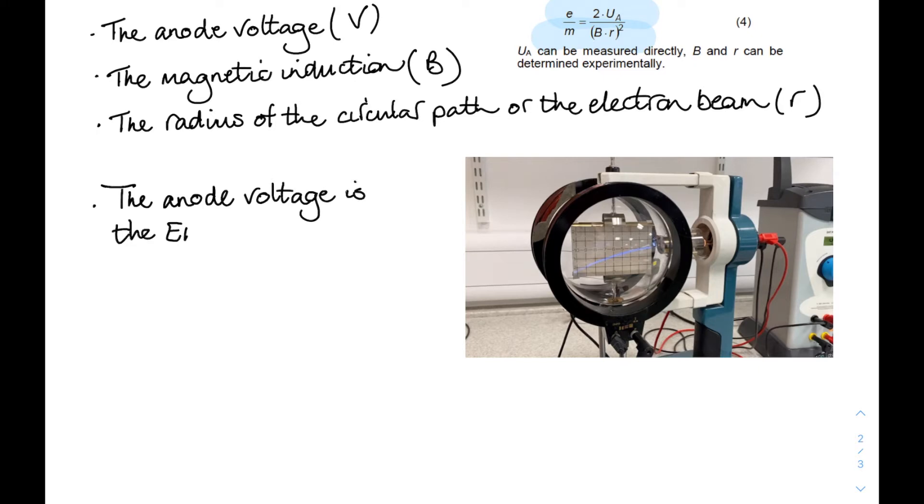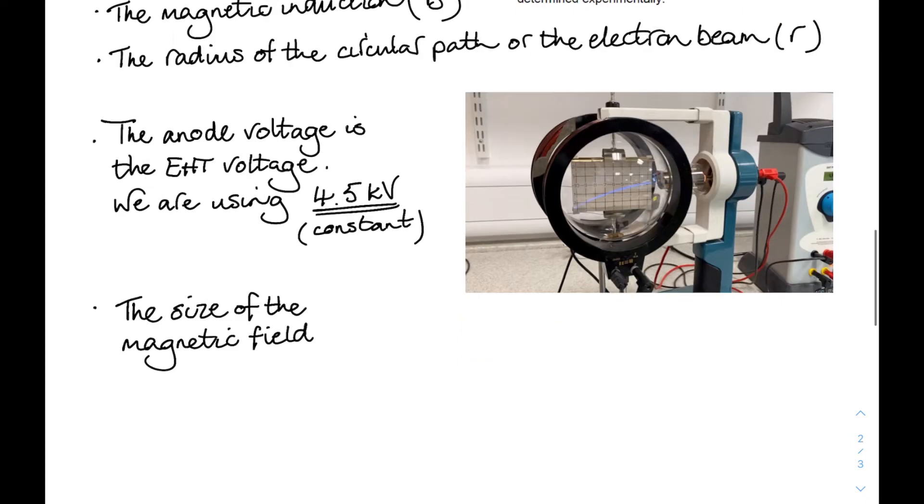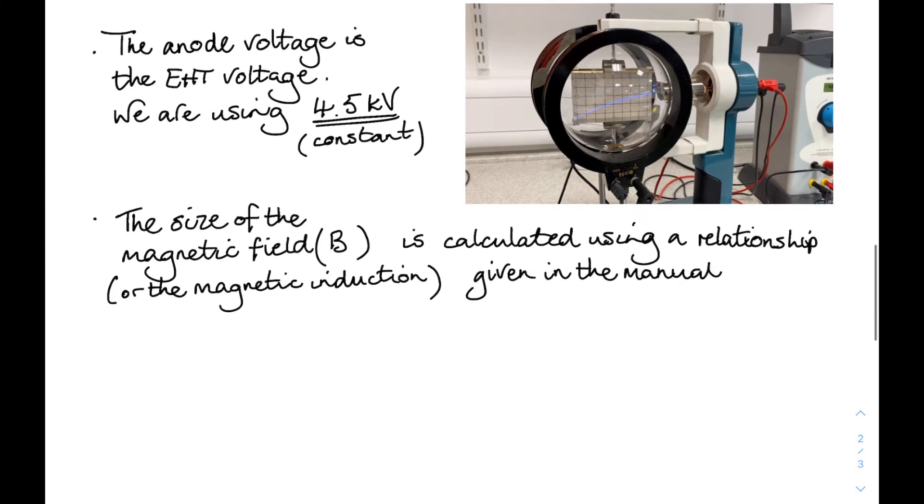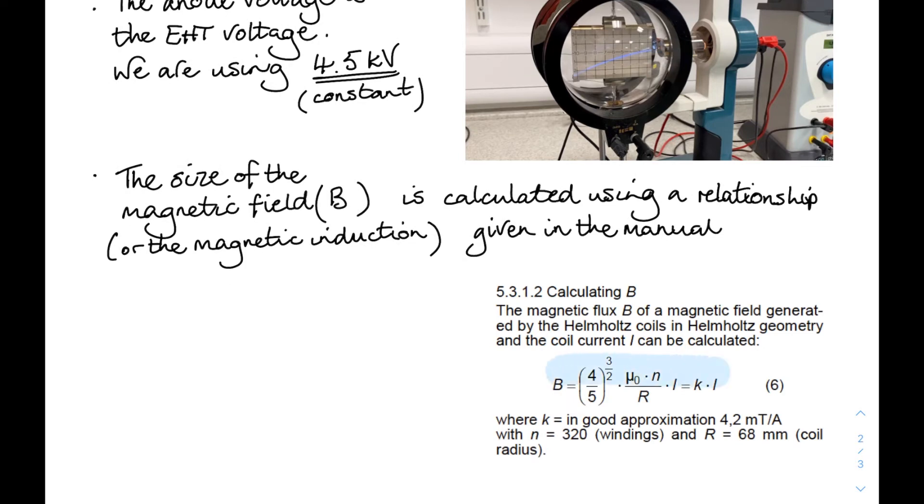Now our anode voltage is going to be kept constant. We're keeping that at 4,500 volts, 4.5 kilovolts. Not going to change that. And the size of the magnetic field can be found using a relationship that's in the manual for the deflection tube. So we calculate that using a little equation that's buried in the instruction manual. Now it looks horrific, that relationship there. But underneath, there's a kind of easy way in, because all that stuff there approximates to a constant of 4.2 times 10 to the minus 3 times the current that we measure. So the size of the magnetic field is just a constant times the current, and that constant is 4.2 times 10 to the minus 3. So all we need to do is multiply that by our currents, and we get the size of the magnetic field.